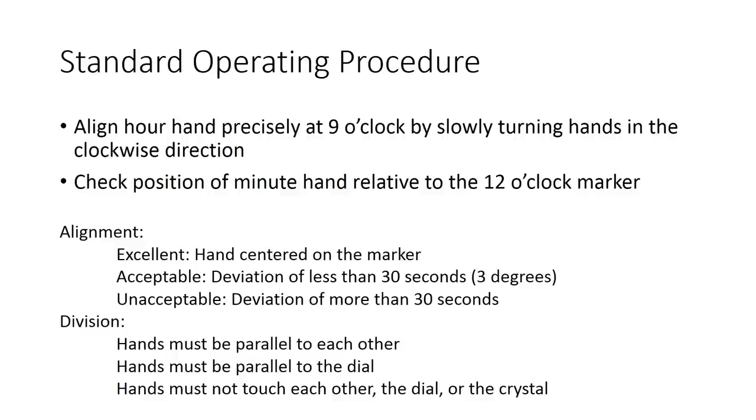The standard specifies that excellent hand alignment means the minute hand will be centered exactly on the marker. It's acceptable if the deviation is less than 30 seconds or 3 degrees of the arc. It's unacceptable if the deviation is more than 30 seconds.